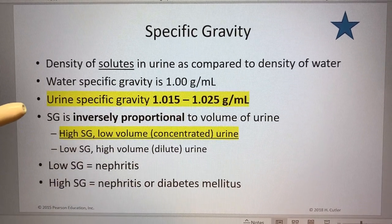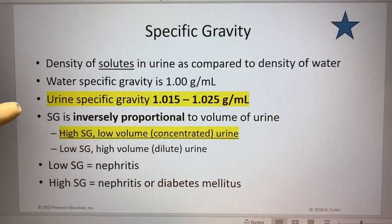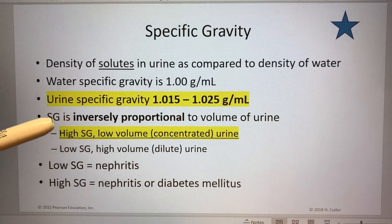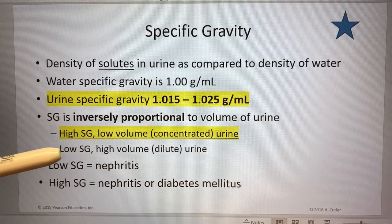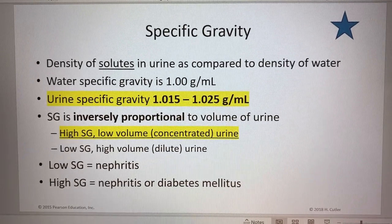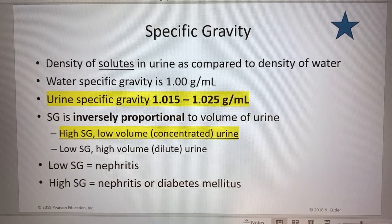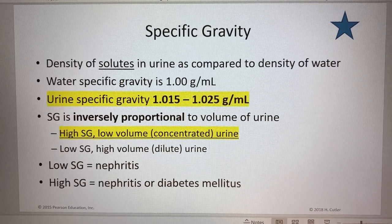That's what it means by inversely proportional: if specific gravity is high, there's not a lot of water and a lot of stuff. If specific gravity is low, there is a lot of water and not much stuff. To shorthand it for an exam: if the urine is concentrated it has a high specific gravity; if it is diluted it has a low specific gravity.